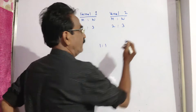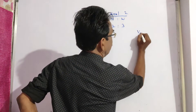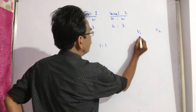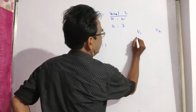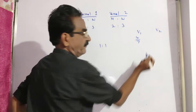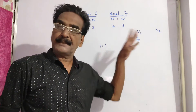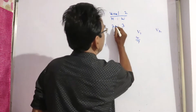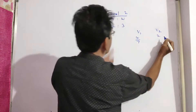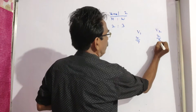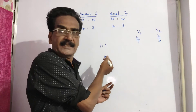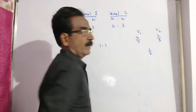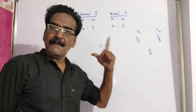According to the rule of allegation, here in vessel V1, milk is 4 by 7. I am taking milk — you can do this problem by taking water also and will get the same answer. In the second vessel, milk is 2 by 5. In the final resultant mixture, the milk must be 1 by 2, so I am considering milk.